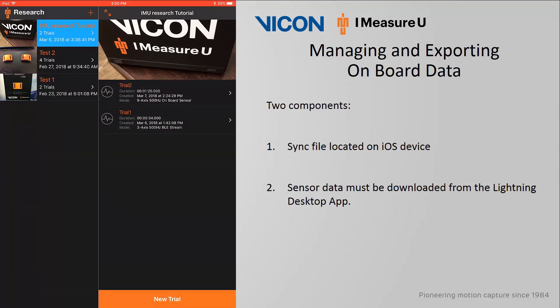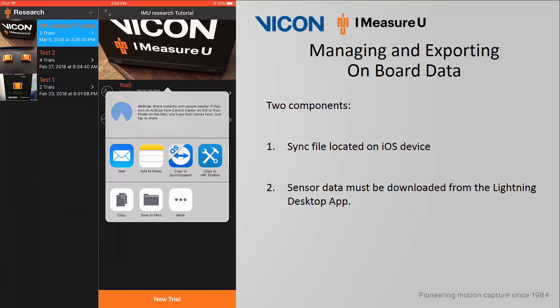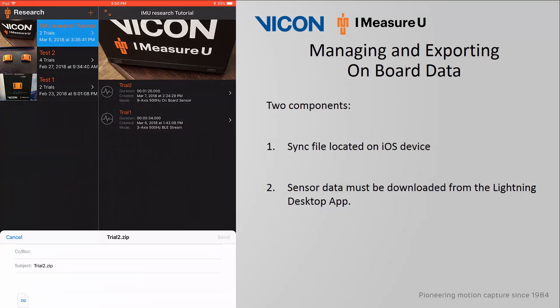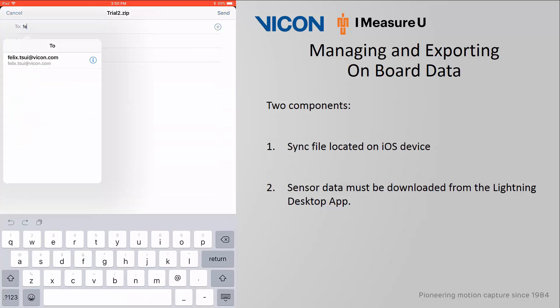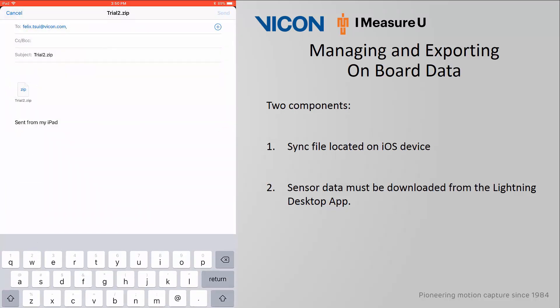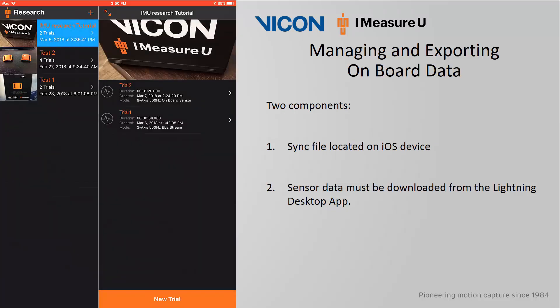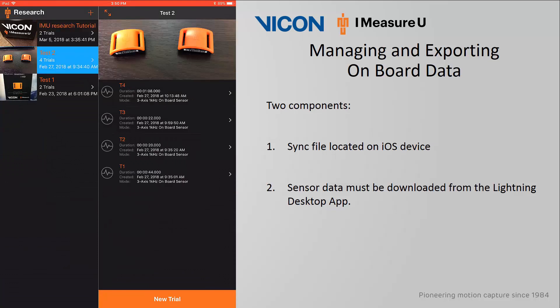Extracting data from the onboard sensor memory consists of two components. The first is to extract the sync file from the iOS device. Swipe left on the trial and click Export. As before, you have many options including to save from iTunes, but I will send it via email in this example. I will enter my email and then click Send.